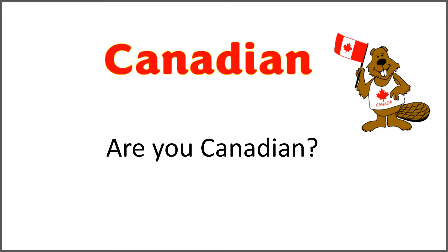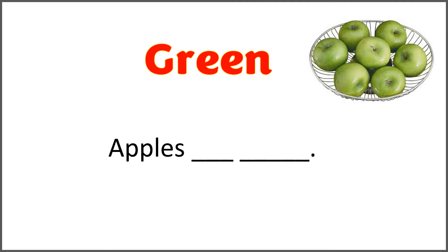It can be 'are they Canadian' or 'are my friends Canadian?' Are your friends Canadian? Or you can replace Canadian with another nationality like 'are you American? Are you British? Are you Pakistani?' The given word is 'green' and the sentence is 'apples blank blank.' It's more than one apple. Use 'green' with 'are' to complete the sentence.